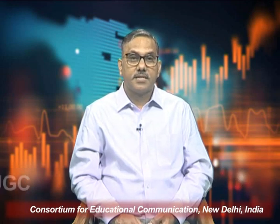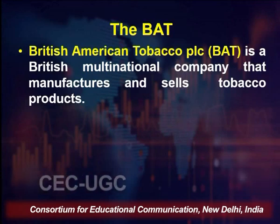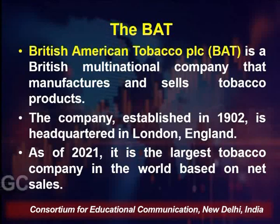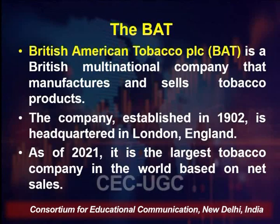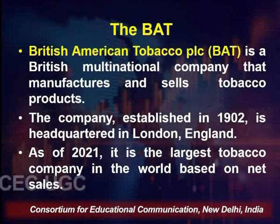If we look at British American Tobacco Company, known as BAT — British American Tobacco PLC — it is a British multinational company which manufactures and sells tobacco products. The company was established in 1902 and has its headquarters in London. As of 2021, this company is the largest tobacco company in the world based on net sales. The location relevant to our case study is a place called Kushtia, a town approximately 5 hours' drive from the capital of Bangladesh, Dhaka, and it is located near to the project sites.